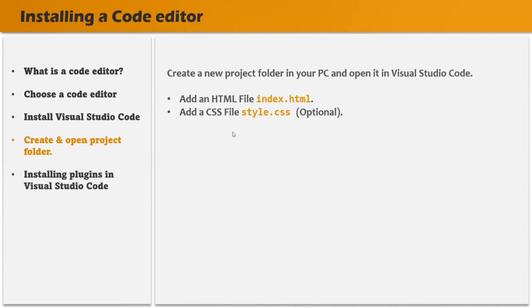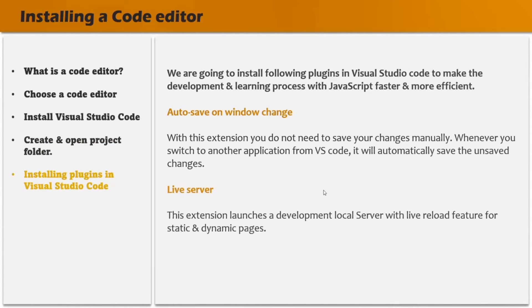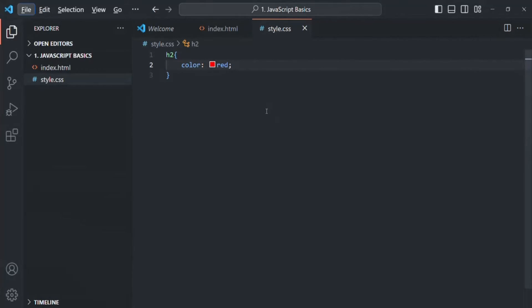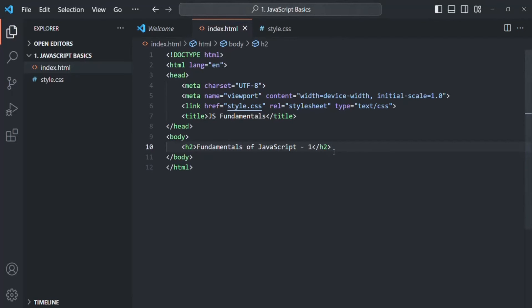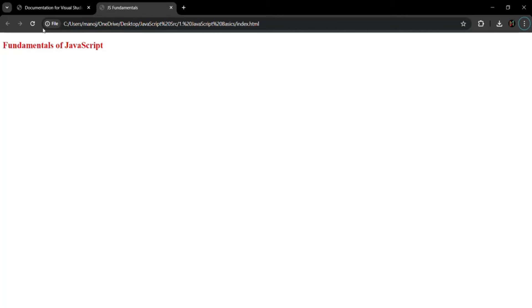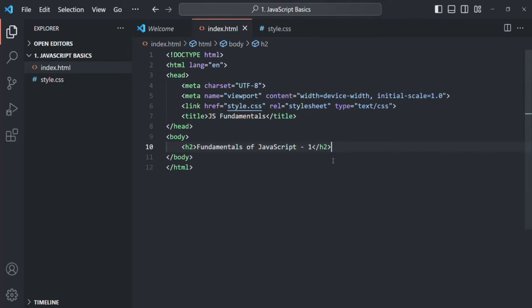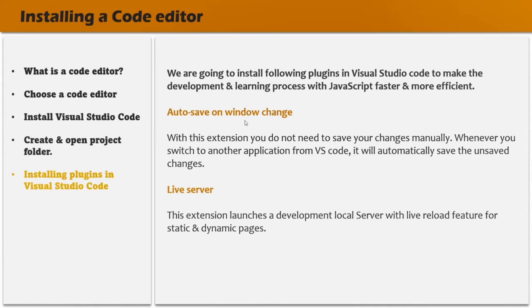Now we are going to install some plugins for Visual Studio Code. We are going to install two plugins: Auto Save on Window Change and Live Server. Currently, if I make changes in index.html without saving and go to the browser, you will not see the change — you have to save first and then refresh the page. But using the Auto Save on Window Change plugin, whenever the window changes — whenever we move from Visual Studio Code to another window — the changes will be saved automatically, so we won't have to manually save every time.